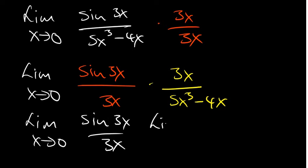So we have 3 over... So we've factored out an x there. So on the denominator part, you know that you've factored out x, so you're going to have 5x squared minus 4, right?